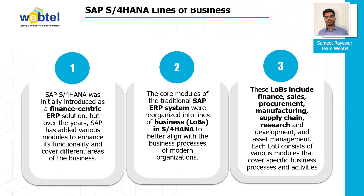SAP S4 HANA lines of businesses: SAP S4 HANA was initially introduced as a finance-centric ERP solution, but over the years it has added various modules to enhance its functionality and cover different areas of the business. The core modules of the traditional SAP ERP system were reorganized into lines of businesses, called LOBs, in SAP S4 HANA to better align with the business processes of modern organizations. These LOBs include finance, sales, procurement, manufacturing, supply chain, research and development, and asset management.